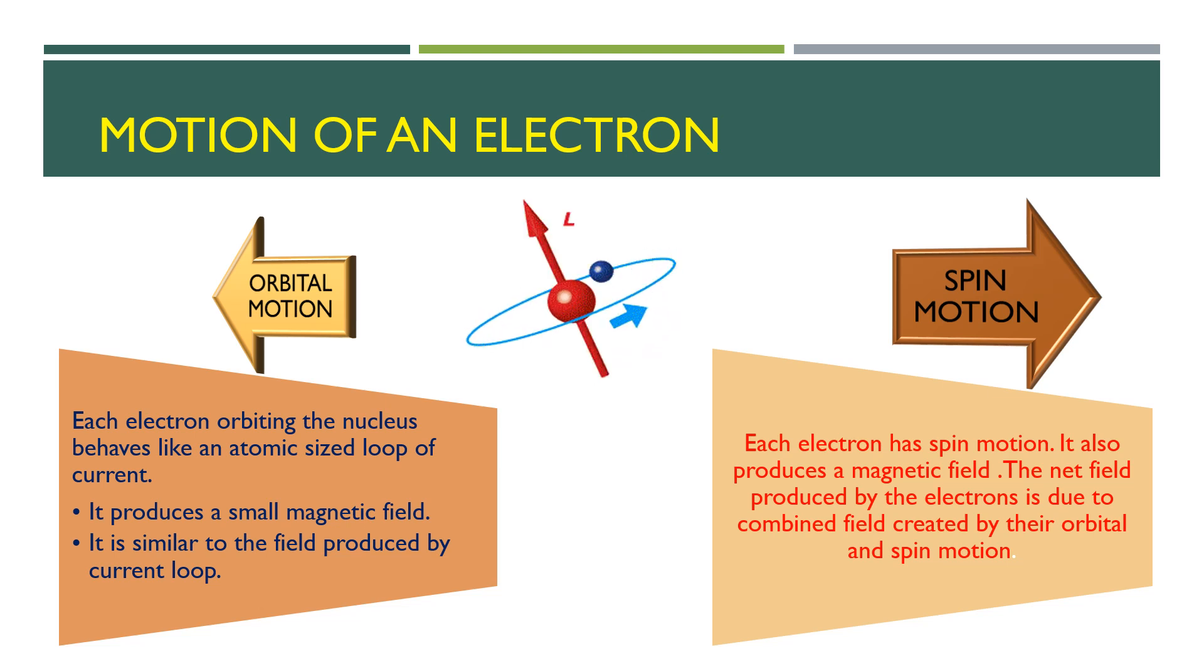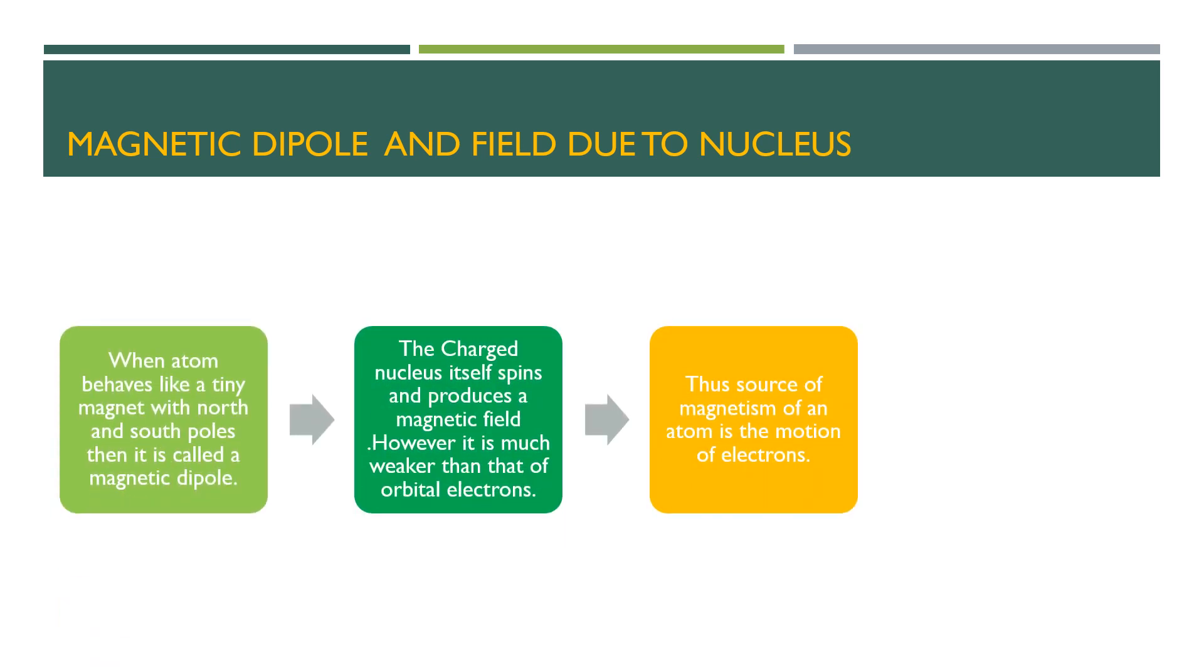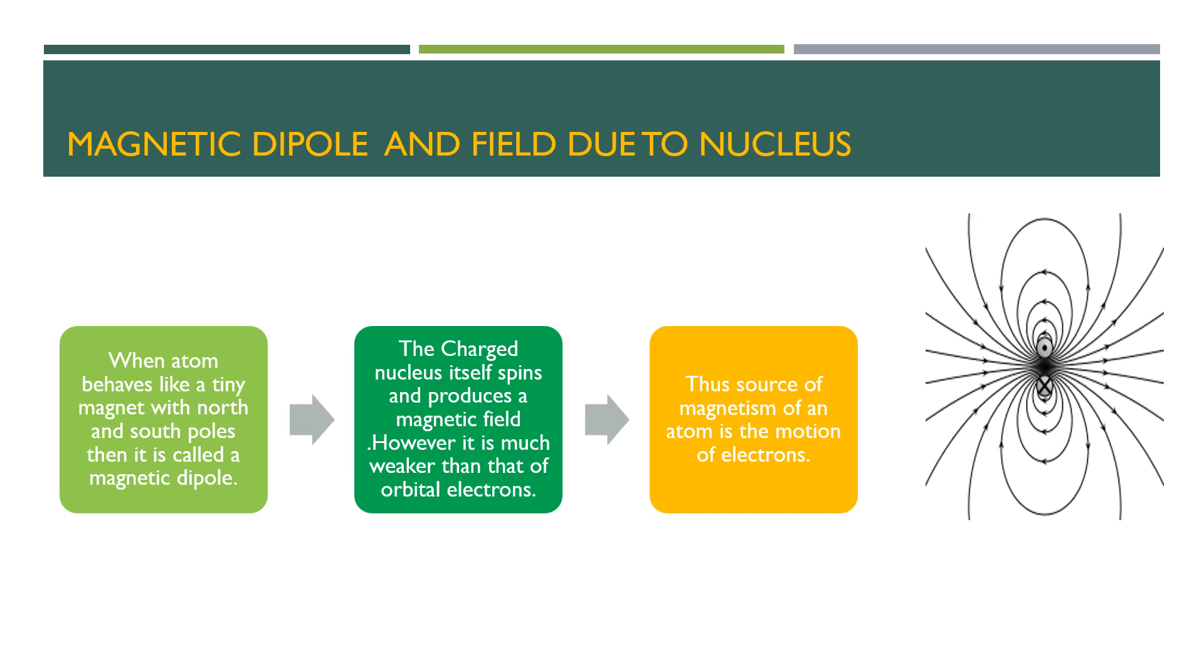An atom in which there is a resultant magnetic field behaves like a tiny magnet and is known as a magnetic dipole. The magnetic fields of the atom are responsible for the magnetic behavior of the substances made up of these atoms. Magnetism is therefore due to the spin and orbital motion of the electrons surrounding the nucleus and is thus a property of all substances.